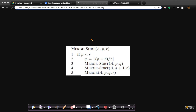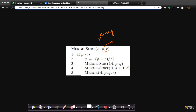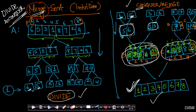So we have two functions here. The first function is called the merge sort function, which has three parameters. We have the array A — this is my actual array. P is the index of the first element that I want to sort. For example, if you take this array, what is the index of the first element I want to sort? It's 1. So P equals 1 when we start. And R is basically the last index of the array.